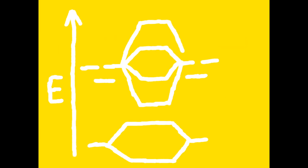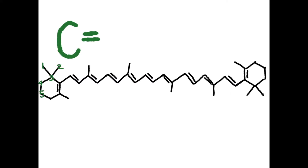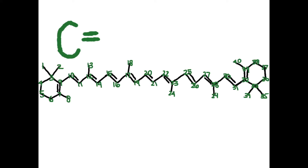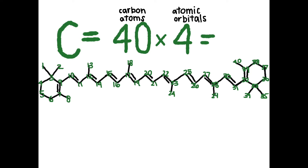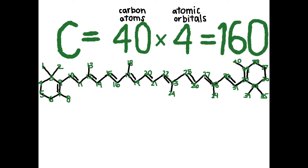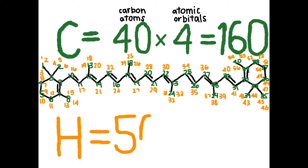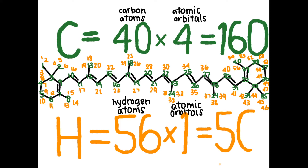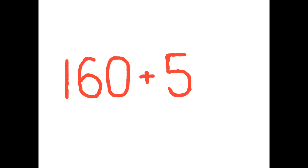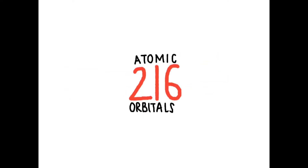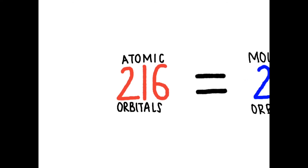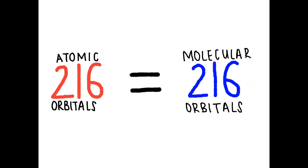It's time for us to count the molecular orbitals of beta-carotene. We start by counting the total atomic orbitals present in the molecule. First, we count the number of carbon atoms. Each carbon atom contributes four atomic orbitals, giving a total of 160 atomic orbitals from carbon atoms. Each hydrogen atom contributes one atomic orbital, giving a total of 56 atomic orbitals from hydrogen atoms. Adding 160 and 56 together, we get a total of 216 atomic orbitals in beta-carotene, meaning we also have 216 molecular orbitals.